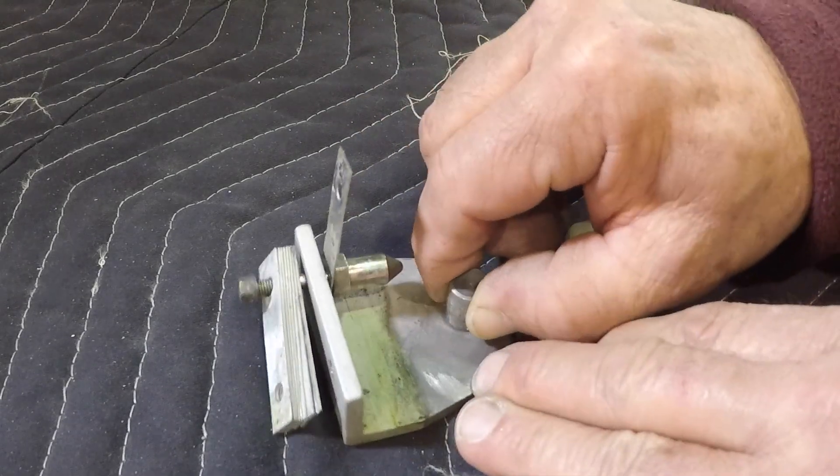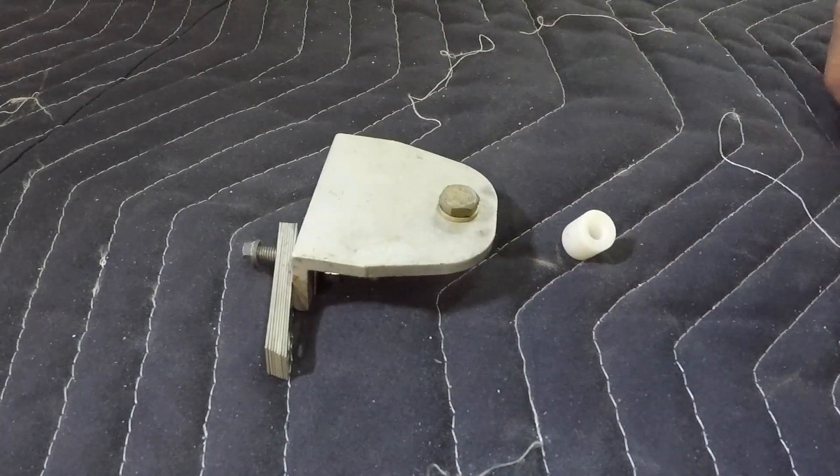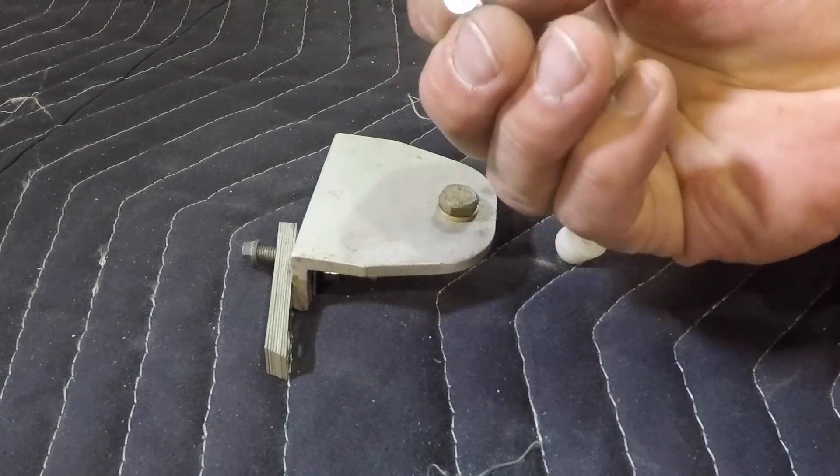Now this is supposed to rotate freely, and this one does not. What is supposed to be here on the bottom is an 832 countersunk screw.